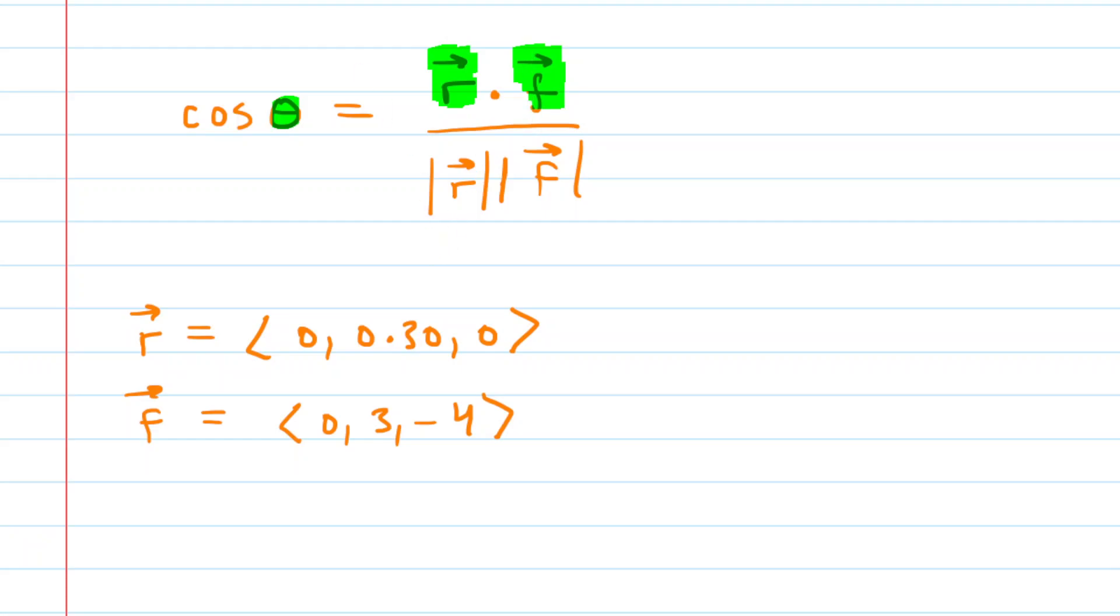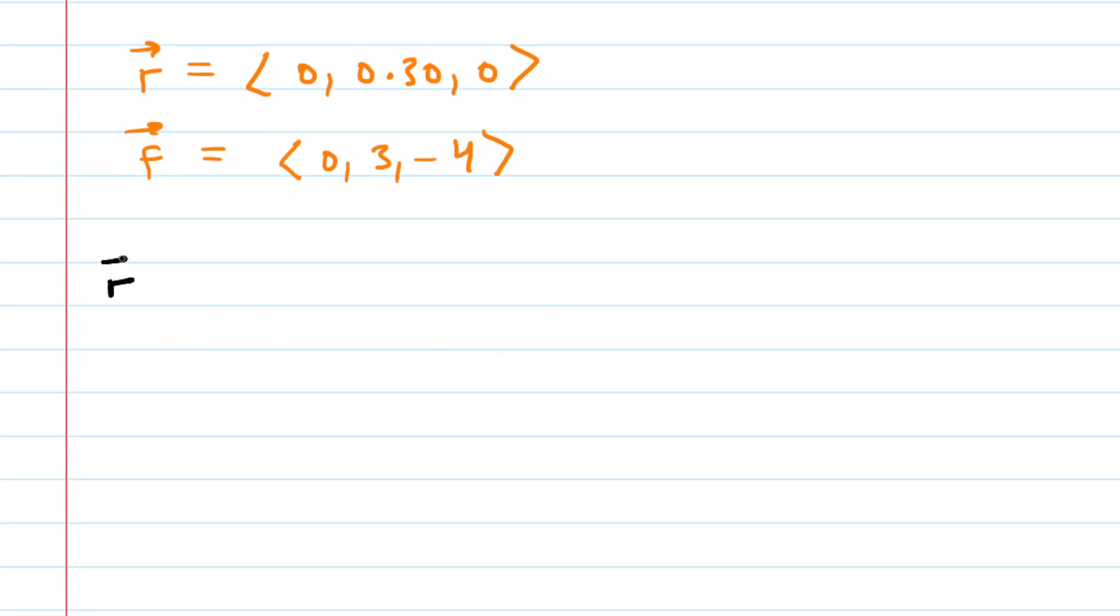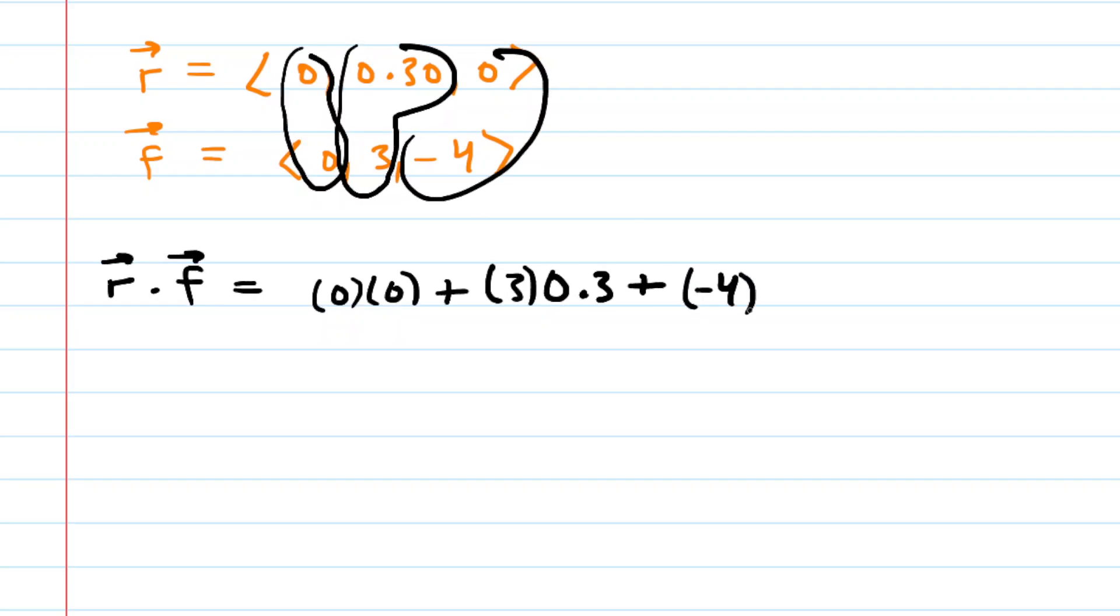And so looking at this formula, you can see we need three things. We need the dot product, we need the magnitude of vector r, and we need the magnitude of that vector giving the direction of the force. We could perhaps begin with the dot product, and this would be a good review of dot products. We're going to take vector r and dot it with that directional force vector. And to do a dot product, you simply find the product of the x components of the vectors. So here would be 0 times 0, and then you add that to the product of the y components, so here that would be 3 times 0.3, and then add that to the product of the z components, so here that would be -4 times 0.